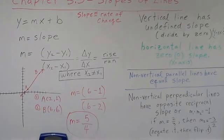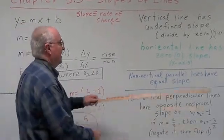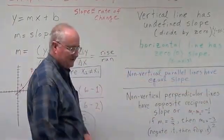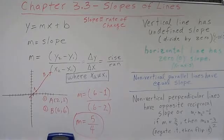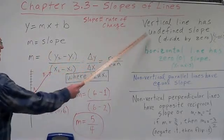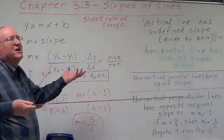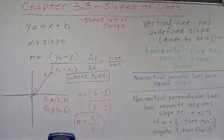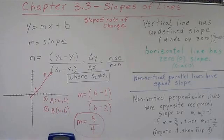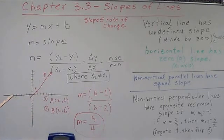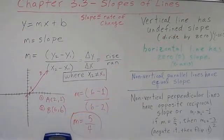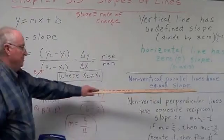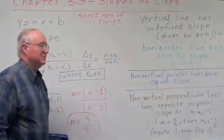Now non-vertical parallel lines have equal slope. Why do we say non-vertical parallel lines? Well, because vertical lines have undefined slope. We don't know what vertical parallel lines are, do they have equal slope? We don't know because we don't know what their slope is. So we have to put this in here: non-vertical parallel lines have equal slope. Something you learned in Algebra 1 and Algebra 2, should be very familiar with.